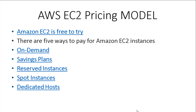There are several instance types and templates, and if we create certain EC2 instances we have to pay Amazon. Basically there are five ways to pay for Amazon EC2 instances: first is On-Demand, next is Savings Plan, third is Reserved Instances, next is Spot Instances, and next is Dedicated Hosts. There is also one more method I will discuss later.